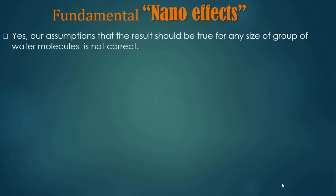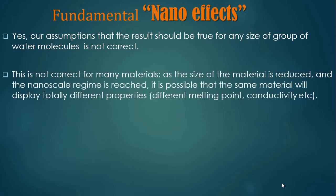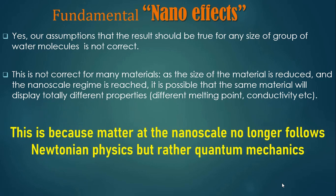Our assumption that results should be true for any size group of water molecules is not correct. As the size of material is reduced to the nanoscale regime, some materials show totally different properties — different melting points, different conductivity, different magnetic properties, different electrical conductivity. This is because matter at the nanoscale no longer follows Newtonian physics law, but follows quantum mechanics. This is the prime reason that nanotechnology is so interesting for researchers.